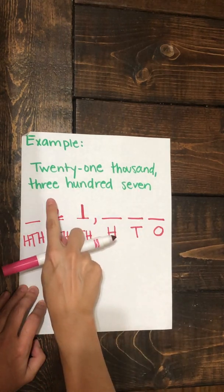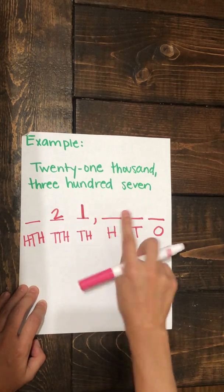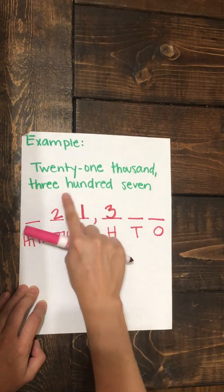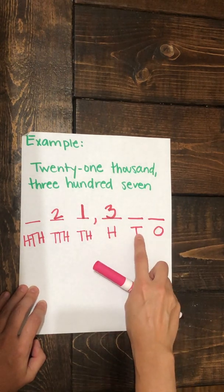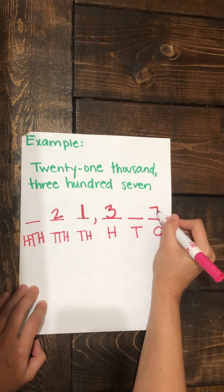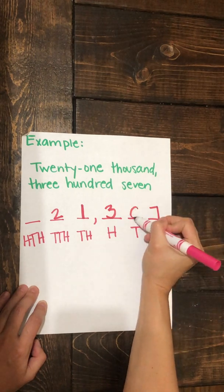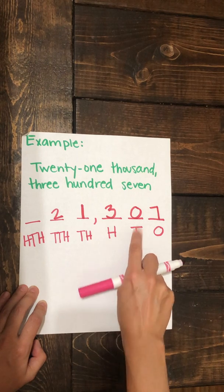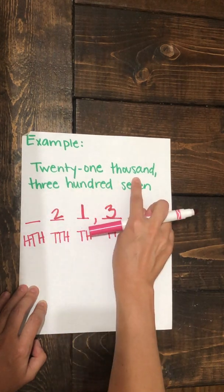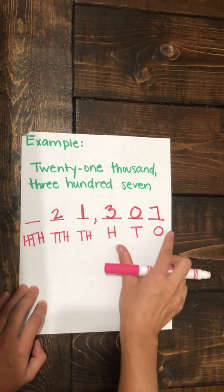The next chunk is 307. That tells me I have a three in the hundreds place, giving me a value of 300. Now I see 307 — if I put a seven in the tens place, that's going to turn into 70, so seven has to come in the ones place. That means I need to put a zero in the tens place, because if we don't have a digit we need to represent it with a zero. So let's check ourselves: we have 21,000 represented here, and 307 represented here.